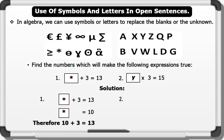2. The expression Y times 3 equals 15 will only be true if the value of Y is 5. Therefore, 5 times 3 gives us 15. That's brilliant.